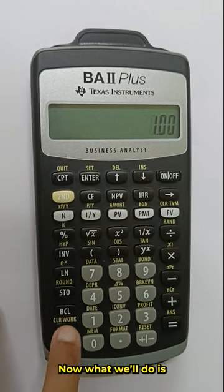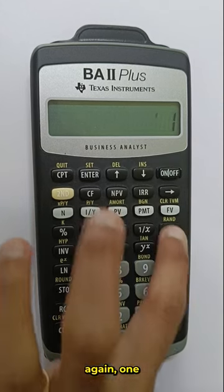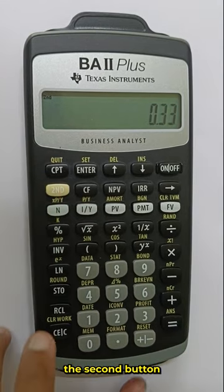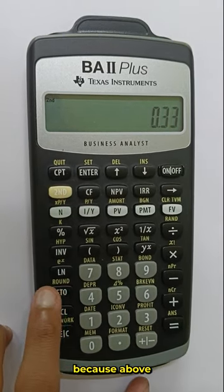Now what we will do is again 1 divided by 3, but we will use the round function by clicking on the second button and the STO button because above this is written round.